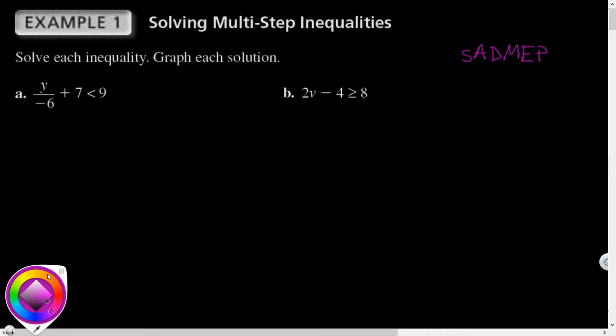Craziness right? So over here, let's see if I want to solve this. I've got y divided by negative 6 plus 7 is less than 9. Two things are happening to y. It's being divided by negative 6 first and then added by 7 second. So I'm going to do those in the reverse order. I will do the inverse of addition first by subtracting 7 from both sides.